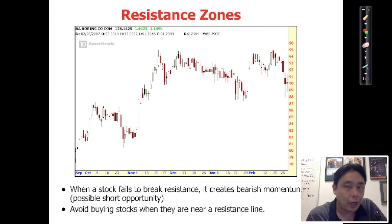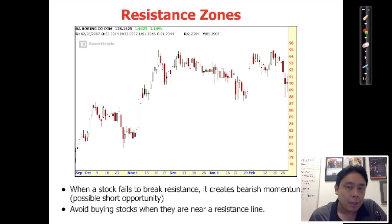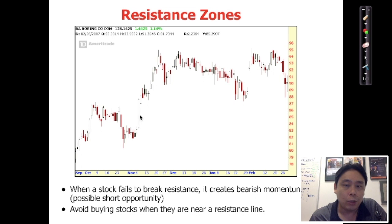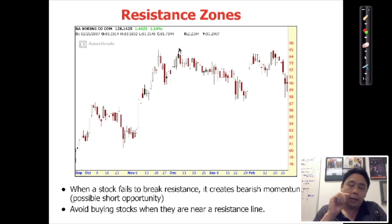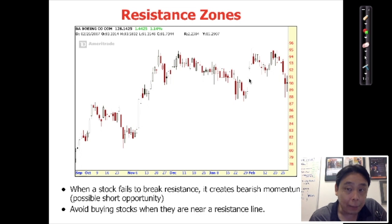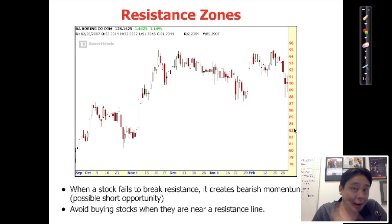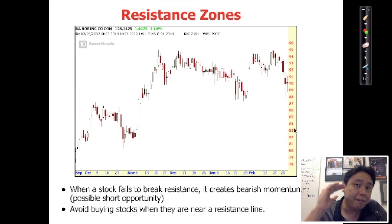When you look at price on a chart, you realize that there are certain price levels where the price tends to meet and reverse. We call these support and resistance levels or zones. For example, if you look at Boeing, the price is on an uptrend. It goes up and when it hits a level of about $95, it starts coming down. Then it goes up again, hits that similar level of $95 plus or minus a few dollars, and comes down again. It goes up again and once again hits $95 and comes down. That tells you there's something at $95.